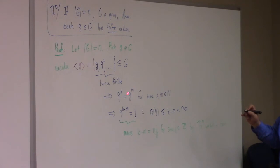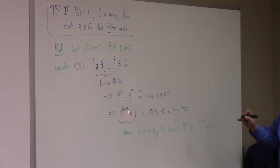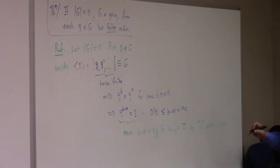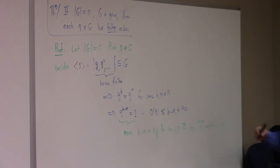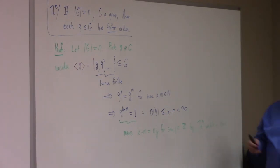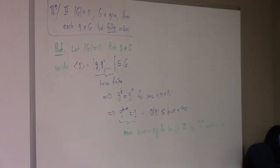So G to the K equals G to the M, which means G to the K minus M equals one. By the theorem I proved in class, that means K minus M is a multiple of N. If it's a multiple of a finite number, it's finite. Consequently, G has order at most K minus M, which proves it's finite. That's theorem number one.